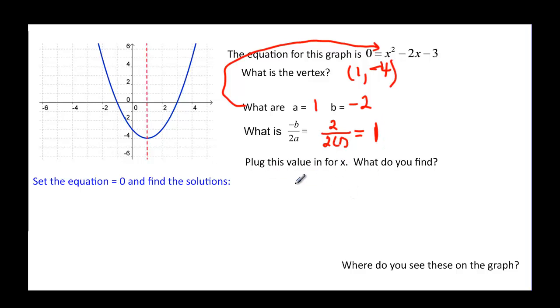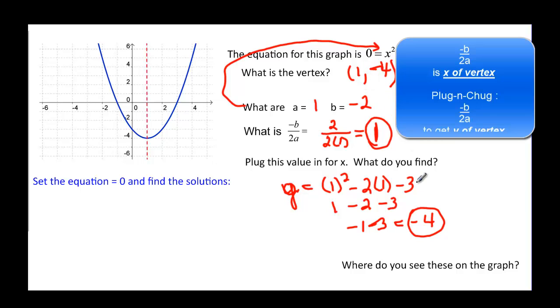Plug this value in for x. So 0 is equal to 1 squared minus 2 times 1 minus 3. 1 minus 2 minus 3. 1 minus 2 is going to be negative 1 minus 3, which is negative 4. And where do you see 1 and negative 4? This is a y value, and this is because we weren't really solving, so y was what it was equal to. Well, x is 1 and y is negative 4, that's our vertex.